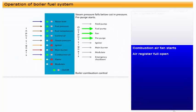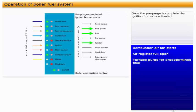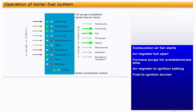Combustion air fan starts. Air register full open. Furnace purge for predetermined time. Once the pre-purge is complete, the ignition burner is activated. Air register to ignition setting. Fuel to ignition burner. Spark igniter operates.